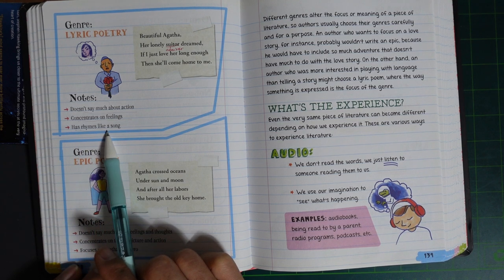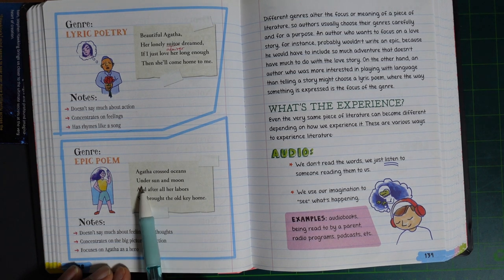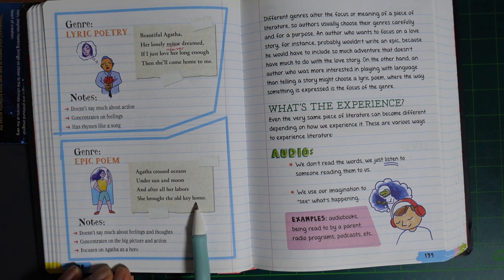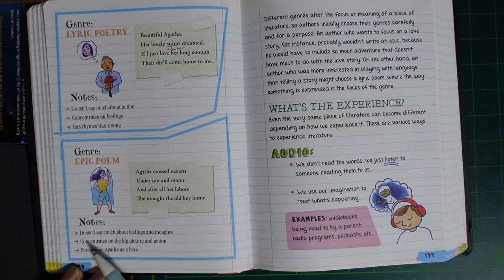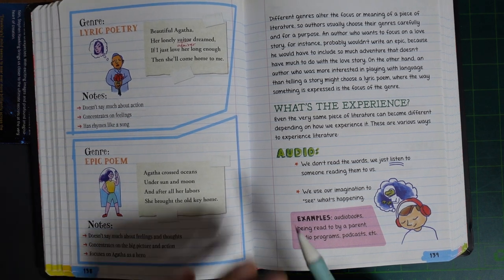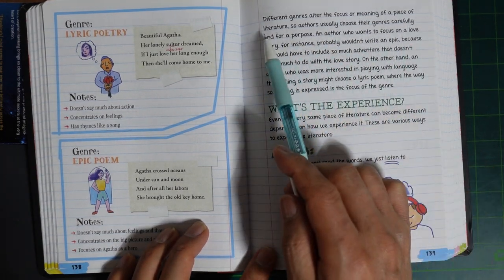Genre: Epic Poem. Agasa crossed the ocean under sun and moon, and after all her labors, she brought the world key home. Notes: Doesn't say much about feelings and thoughts. Concentrates on the picture and action. Focuses on Agasa as a hero. Different genres alter the focus or meaning of the piece of literature.